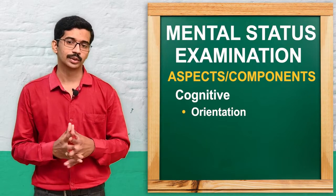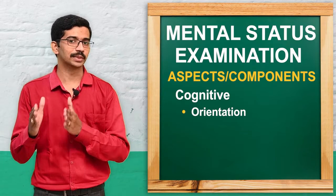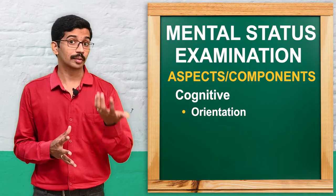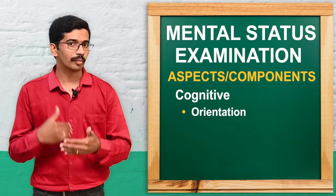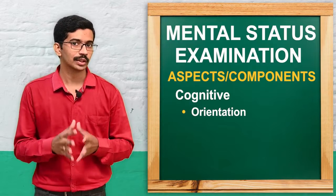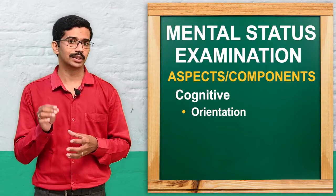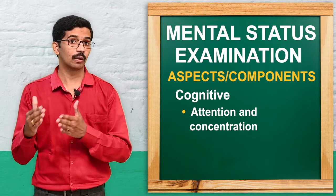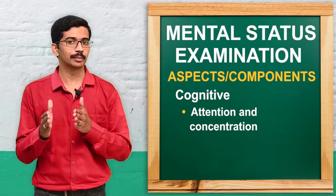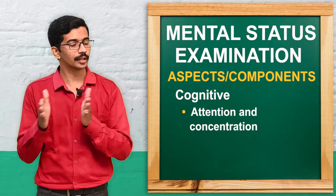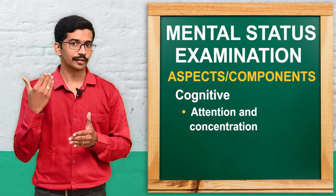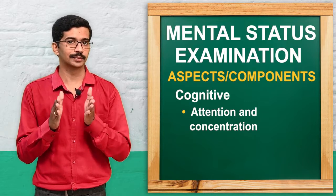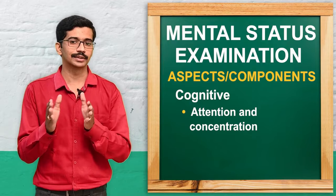Next is orientation. Here we assess whether the patient is oriented to time, place, and person. We can ask simple questions like: 'What is the approximate time now?', 'What is today's date?', 'Where are you?', or 'When were you admitted to this hospital?' We can also ask the patient their name and the names of nearby staff nurses. If the patient answers correctly, they are oriented to time, place, and person. Then comes attention and concentration. We can ask the patient to count digits forward and backward, repeat five flower or fruit names, or subtract seven or three from 100 and count backward.